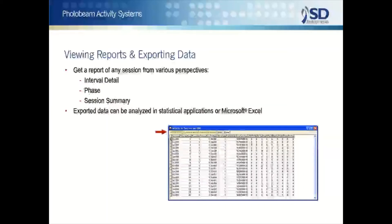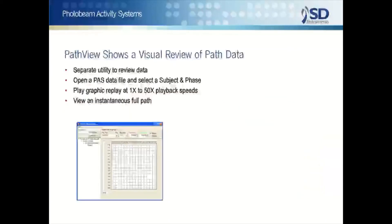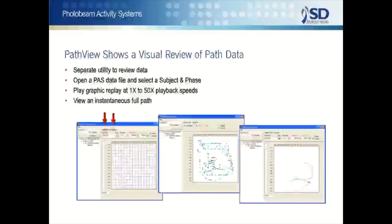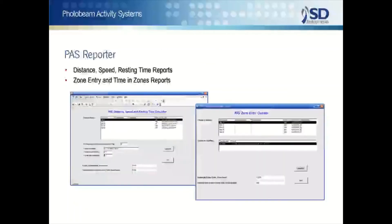At any time, results may be sent with the on-screen export choice to almost all external data management or statistical packages. Path view is a flexible graphics feature that displays an animal's complete path or a path replay, both superimposed on the photo beam matrix used. Fine and ambulatory movement notations are included, as are rearing indicators.